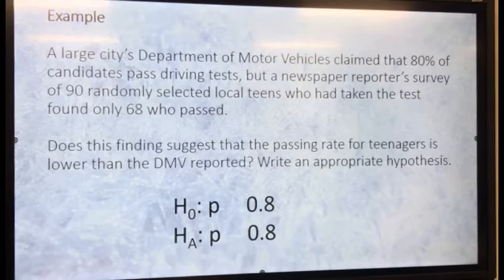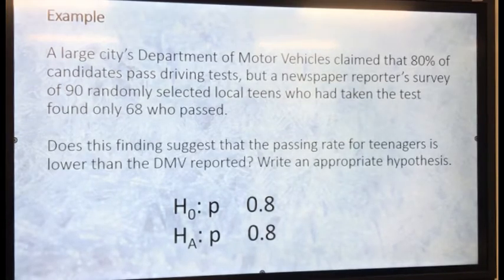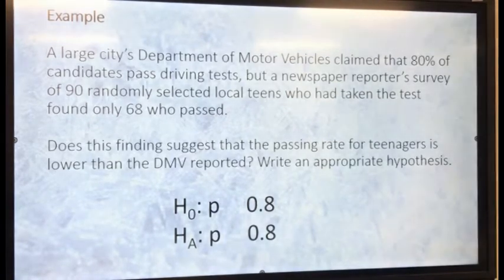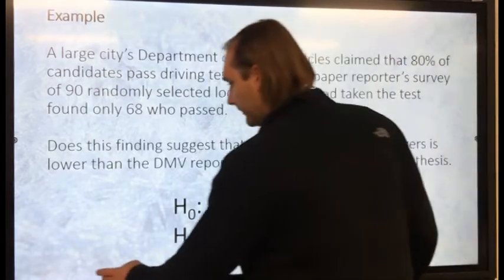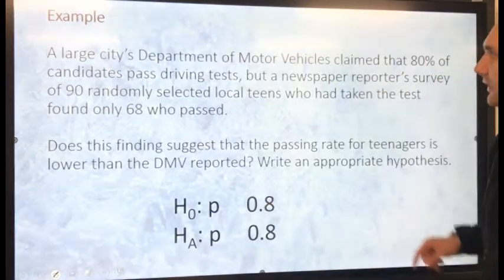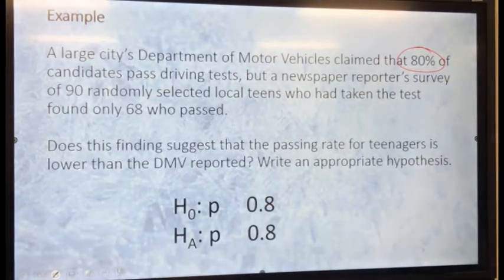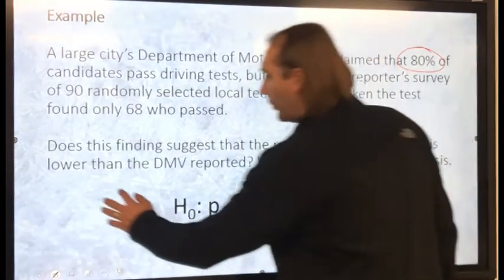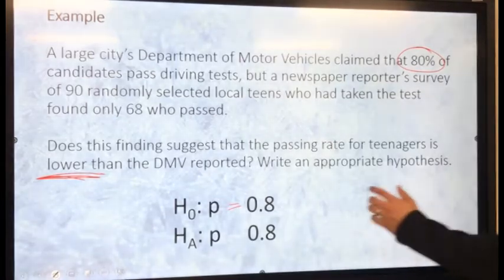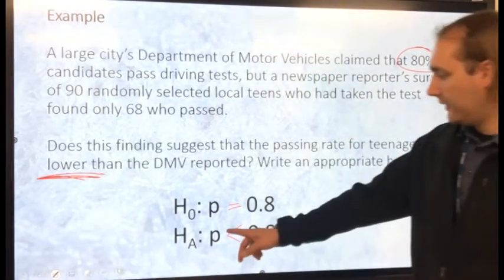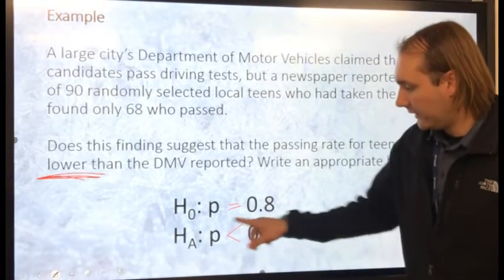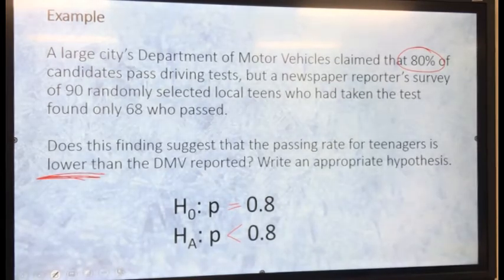Now let's look at some examples of setting up a null hypothesis and alternative hypothesis. A large city's Department of Motor Vehicles claimed that 80% of candidates pass driving tests, but a newspaper reported a survey of 90 randomly selected local teens who have taken the test found that only 68 passed. Does this finding suggest that the passing rate for teenagers is lower than the DMV reported? Write the appropriate hypotheses. So, my H-null is something that hasn't changed — the DMV claims it's 80%, so P equals 0.8. I want to know if the rate for teenagers is lower, so my alternative H-A is P less than 0.8. That would be my H-null and H-A.